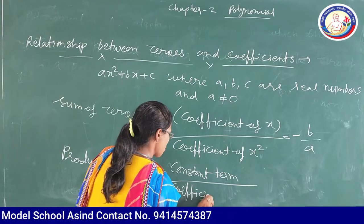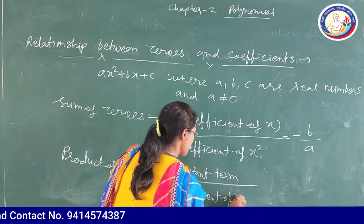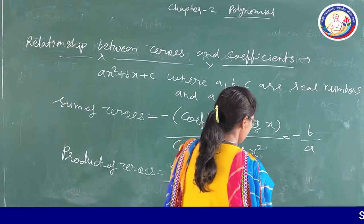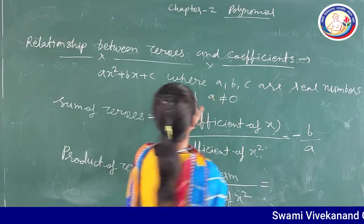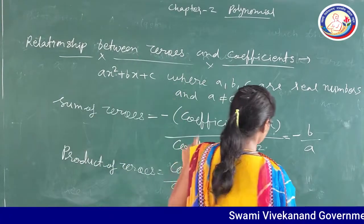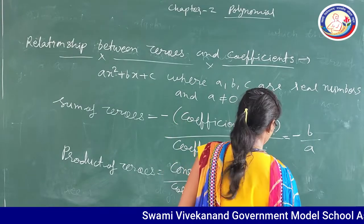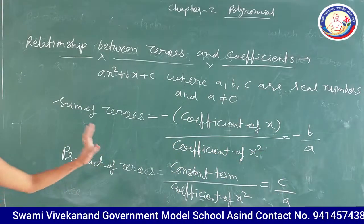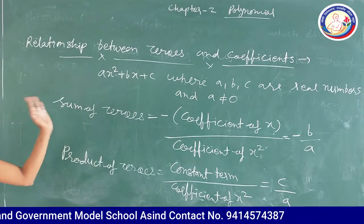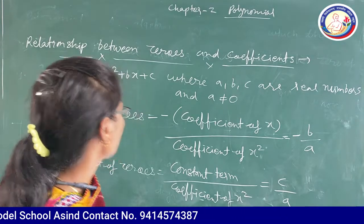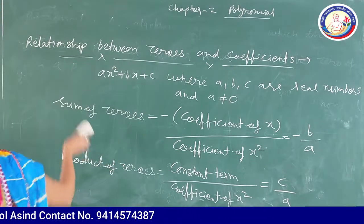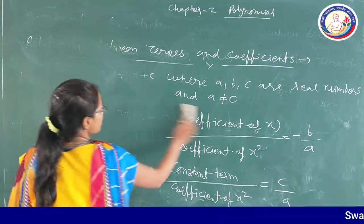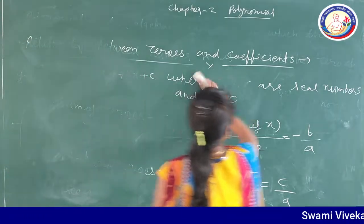Coefficient means the number that is multiplying the variable. Constant term means the term in which no variable appears — that is c. The coefficient of x² is a. So the formula for product of zeros is c by a. To summarize: sum of zeros = minus b by a, and product of zeros = c by a. These two formulas must be learned.